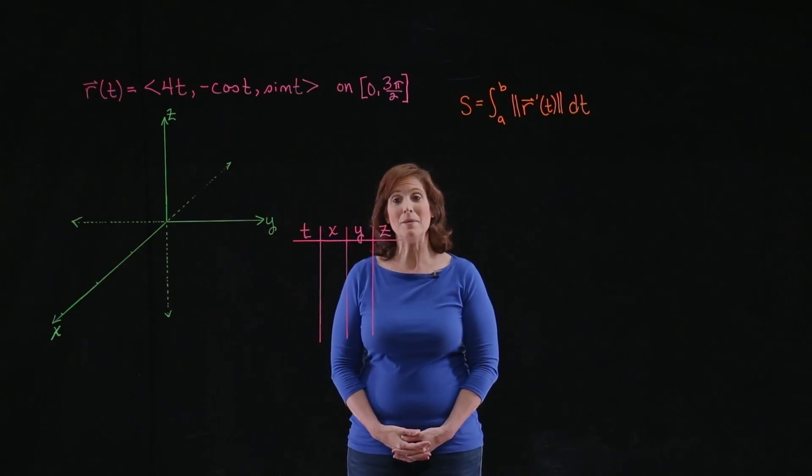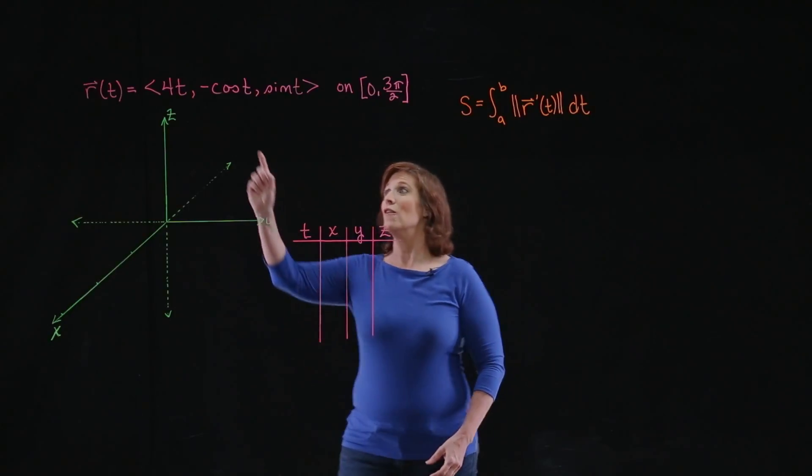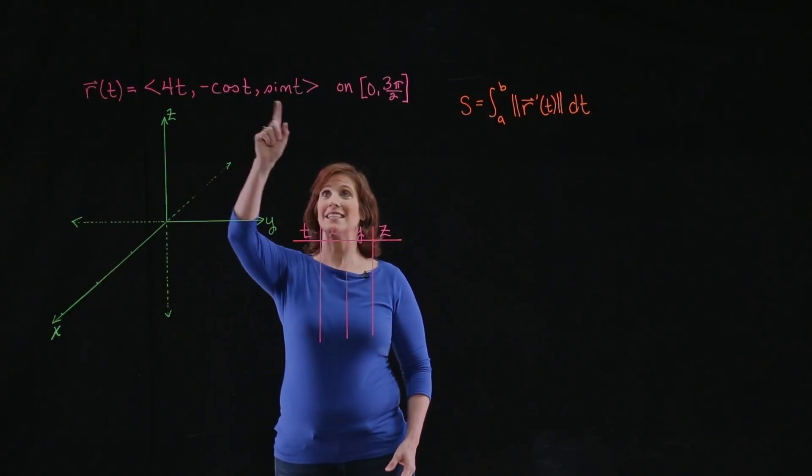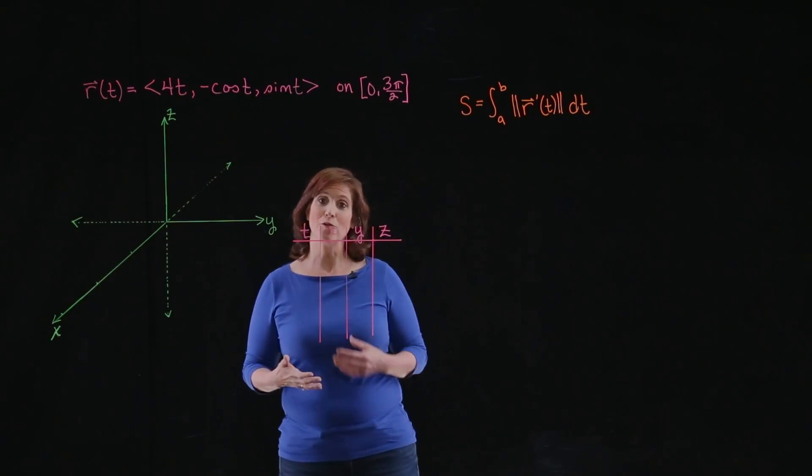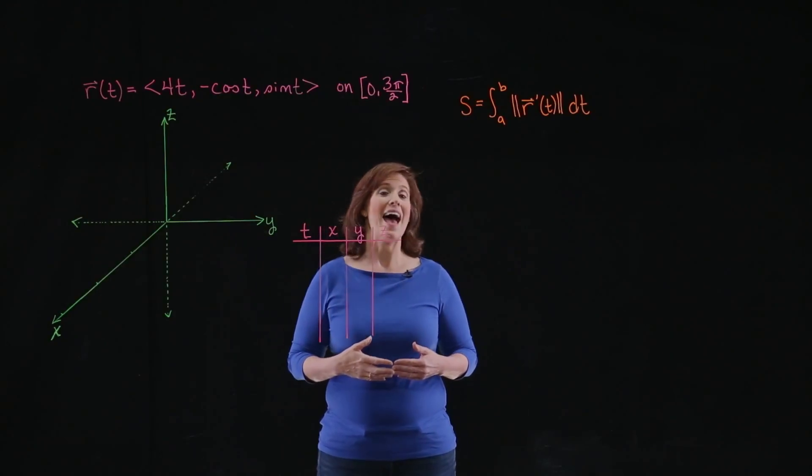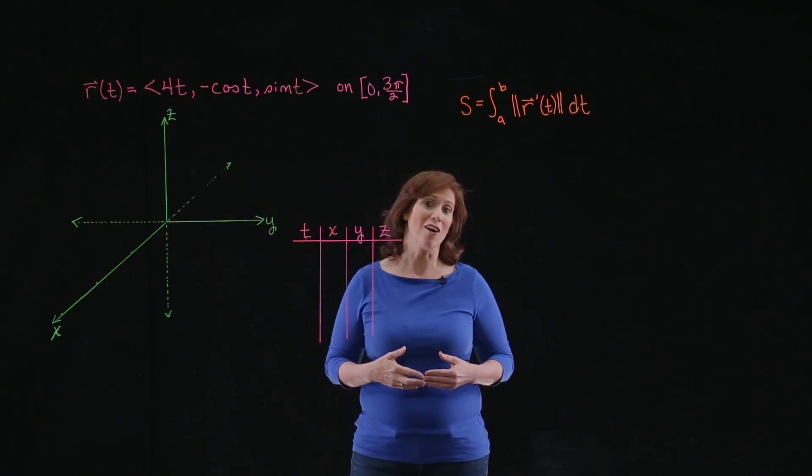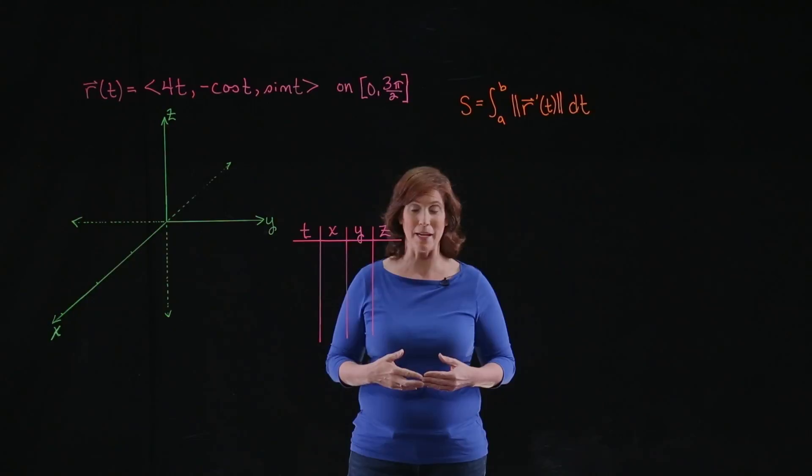Hi, everyone. I'm Cheryl. In this problem, we're going to be sketching the space curve <4t, -cos(t), sin(t)> on the interval from 0 to 3π/2, and then we're going to determine what the arc length of that curve is going to be.